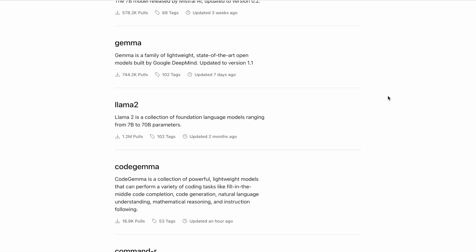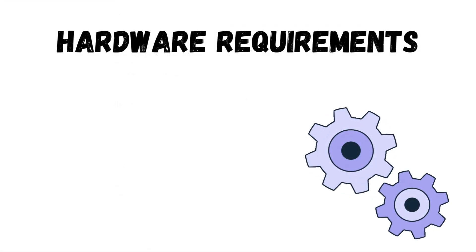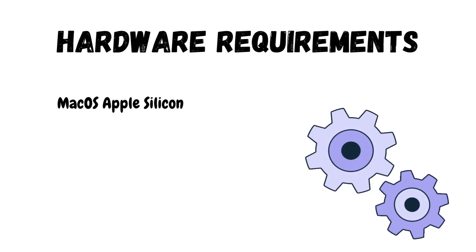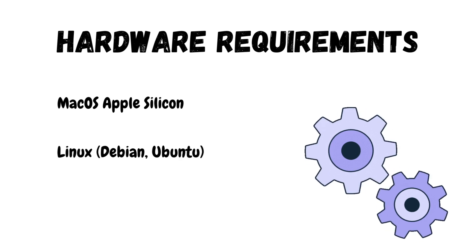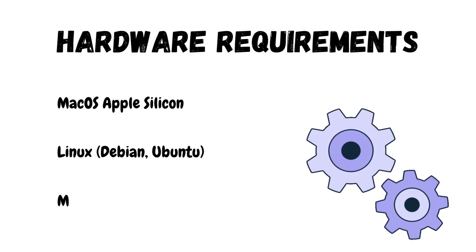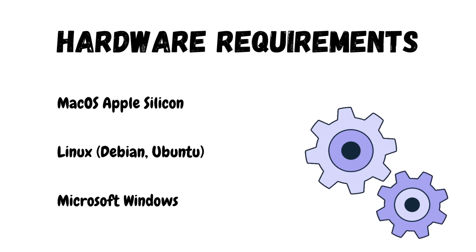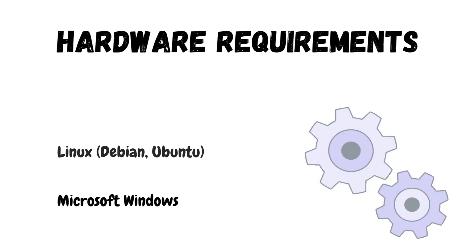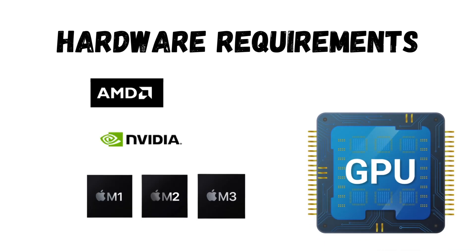But before we proceed with installing OLAMA, let's discuss the necessary hardware specifications. OLAMA is compatible with macOS running on Apple Silicon, or Linux distributions like Debian and Ubuntu, or Microsoft Windows. For the best performance on Linux and Windows systems, it is recommended to have a modern GPU such as NVIDIA or AMD. For Mac users, M1, M2, or M3 chips are optimal. Please keep in mind that each model may have GPU requirements beyond these basic specifications.